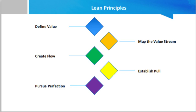The second lean principle is mapping the value stream. In this step, the goal is to use the customer's value as a reference point and identify all the activities that contribute to these values. Activities that do not add value to the end customer are considered waste. Waste can be broken into two categories: non-value-added but necessary, and non-value-added and unnecessary. The latter is pure waste and should be eliminated, while the former should be reduced as much as possible, ensuring customers get exactly what they want while reducing cost.